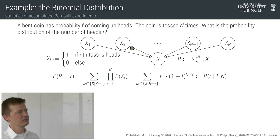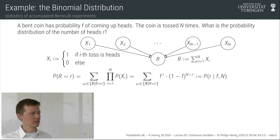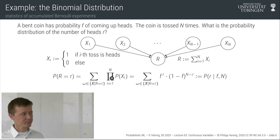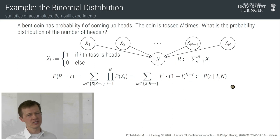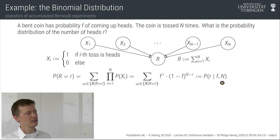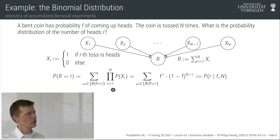We could write this as a conditional probability on f and n, but since we've assumed we know those, we often drop them from the notation. To construct the actual law we need a little combinatorics: how many binary strings of length n contain exactly r ones? That's n-factorial divided by (n minus r)-factorial times r-factorial, the standard 'n choose r'. This is the law of the random variable r.